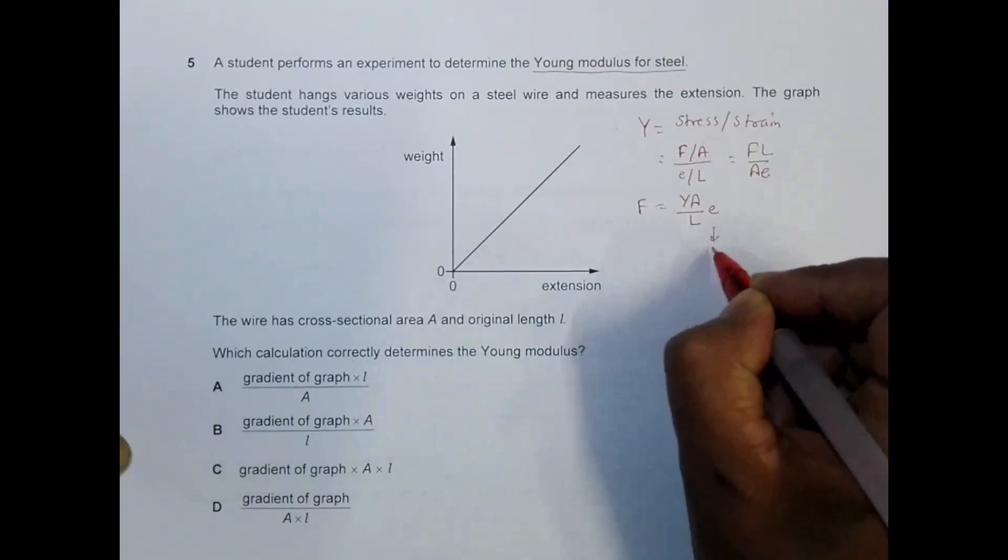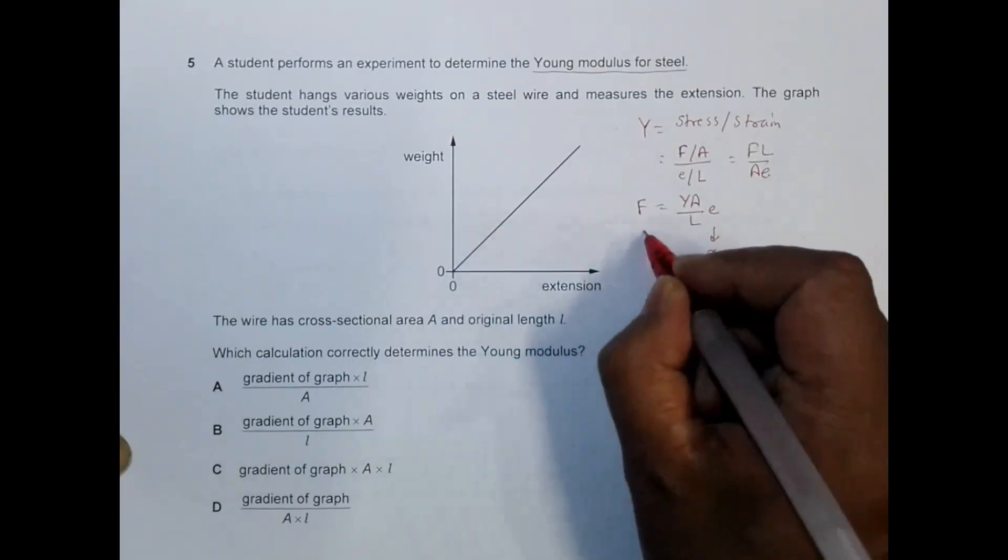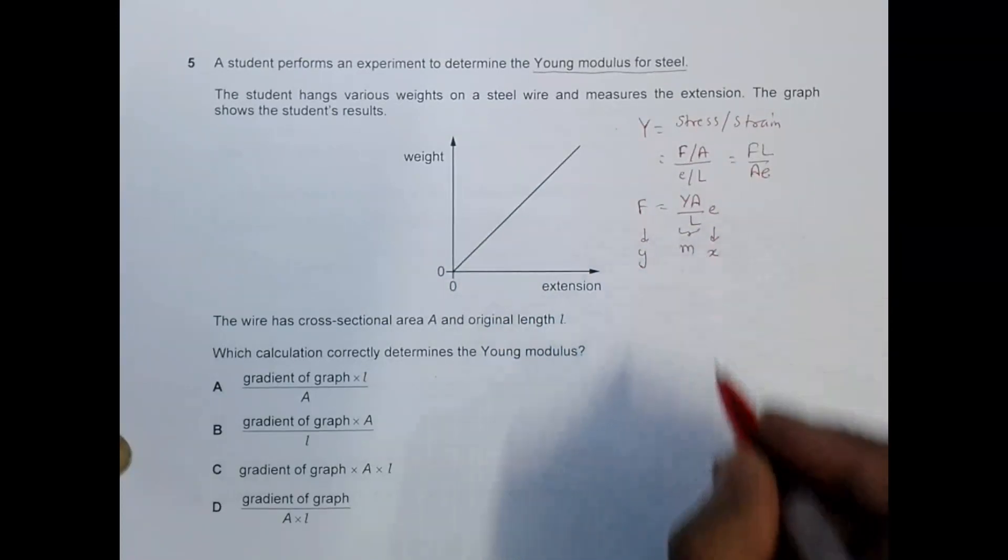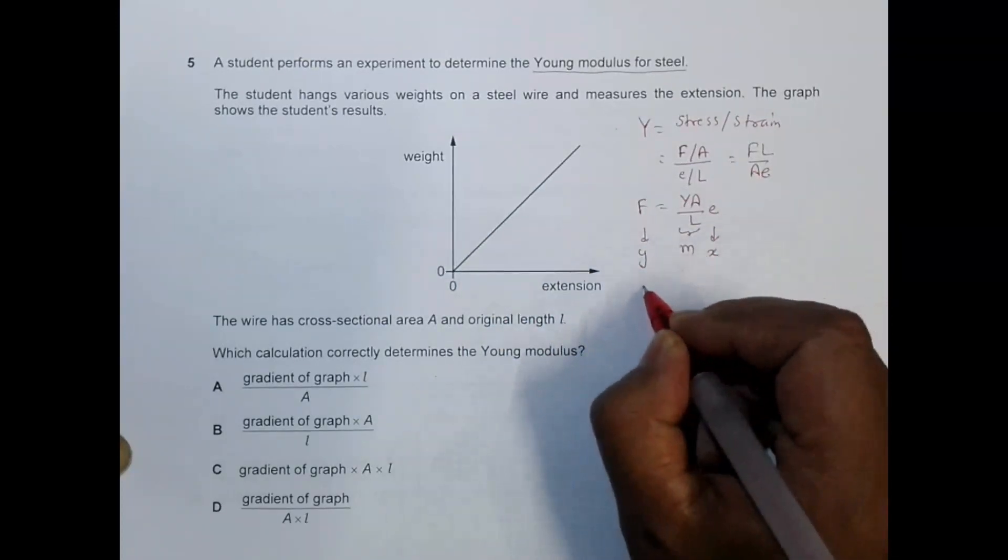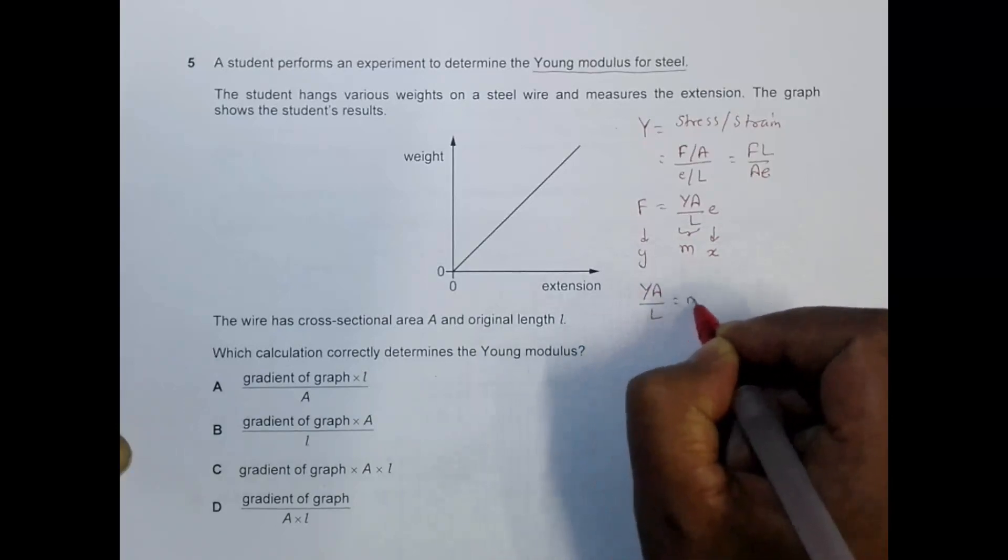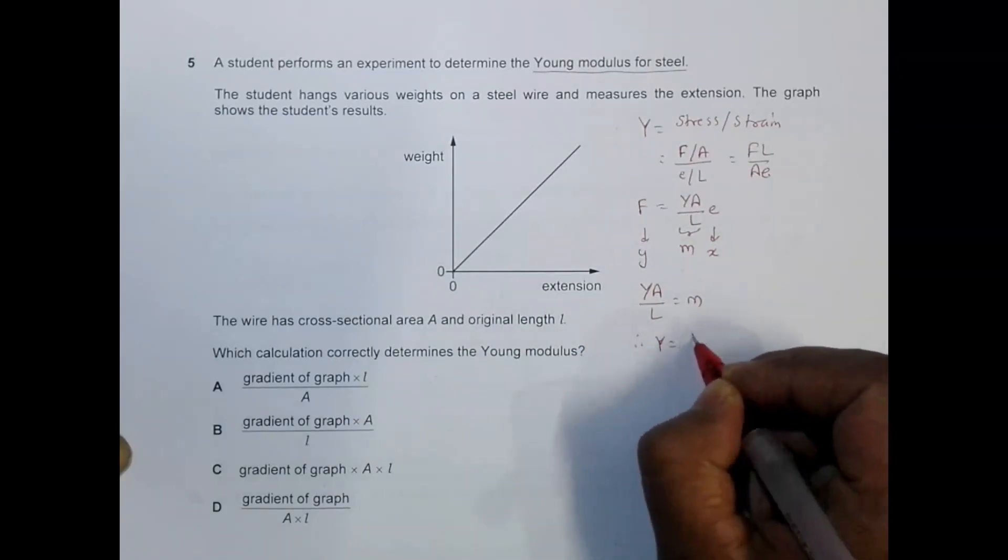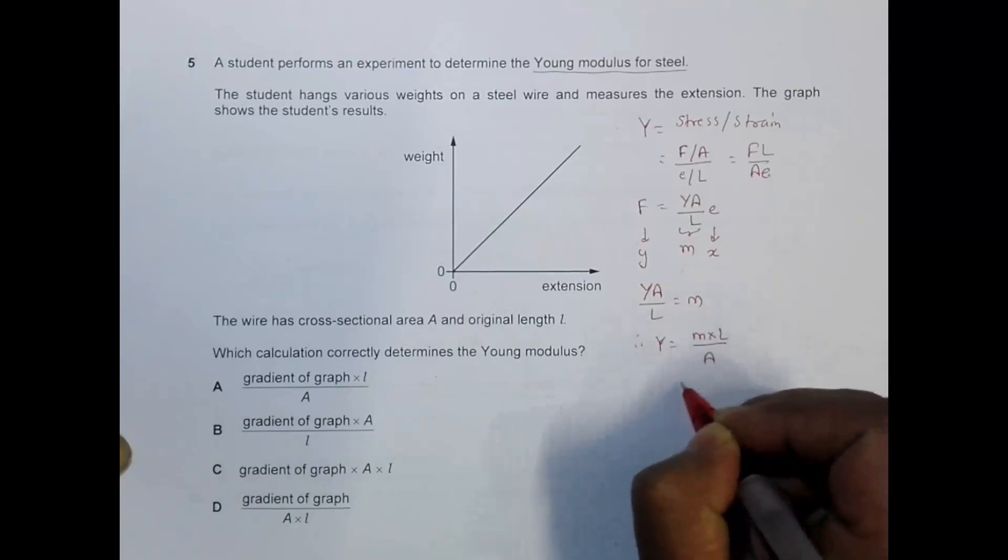Since we've drawn a graph with e on the x-axis and F on the y-axis, this coefficient YA/L should equal the gradient M. So we have YA/L equals gradient M, which gives us Y equals M times L divided by A.